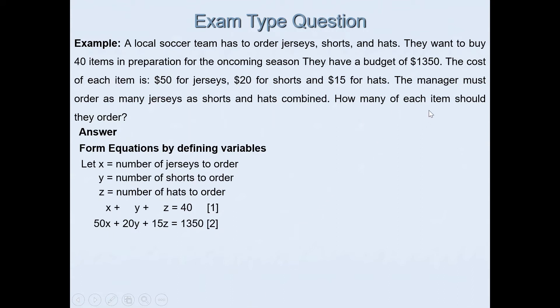It says the manager must order as many jerseys as shorts and hats combined. So the number of shorts and hats that he needs to buy should be equal to the number of jerseys. So x = y + z which is our third equation.